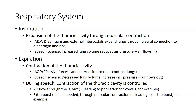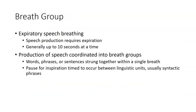During speech production, contraction of the thoracic cavity is carefully controlled so that we have the right amount of airflow through the larynx in order to make phonation happen for vowels, for example. We may also create extra bursts of air through muscular contraction to get something like a stop burst. Speech production happens during expiratory speech breathing, generally in units up to about 10 seconds in time, and the way we produce speech is coordinated to fit within these groups defined by a breath.